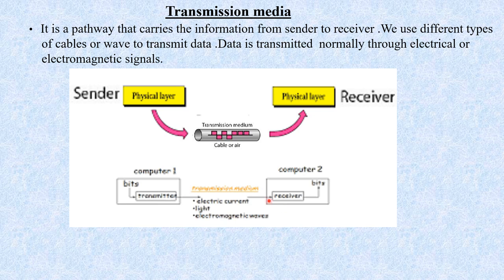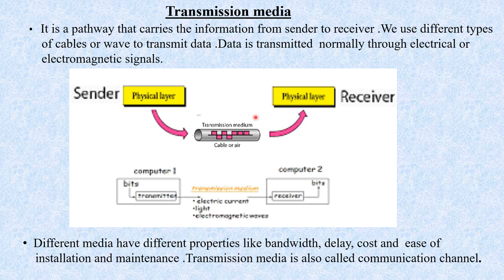Electromagnetic energy includes radio waves, infrared light, visible light, ultraviolet light, X-rays, and gamma rays. These signals can be transmitted through copper wire, optical fiber, atmosphere, or water. Each transmission media has its own properties, and the quality of data sent and received depends on the transmission media used. Different transmission media have different properties like bandwidth, delay, cost, and ease of installation and maintenance. Transmission media is also known as the communication channel.